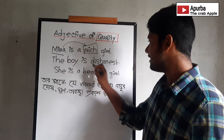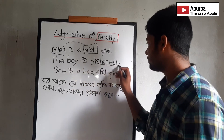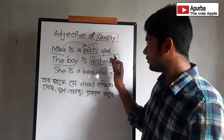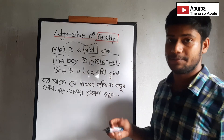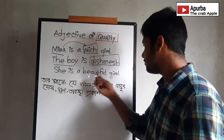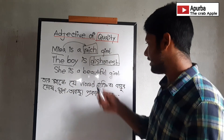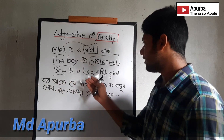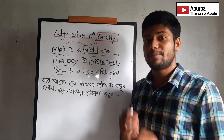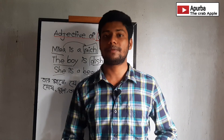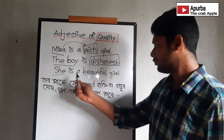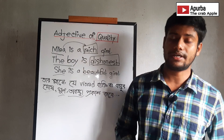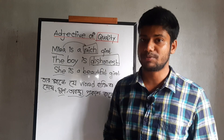Look at the second sentence: 'The boy is dishonest.' Here the word describes a quality of the noun. So when we talk about adjective of quality, that is what we mean.